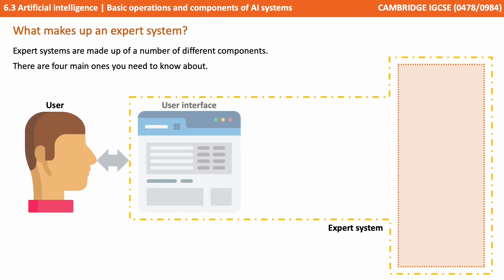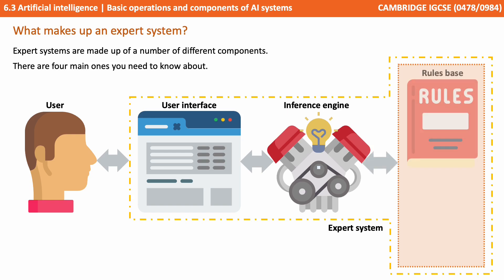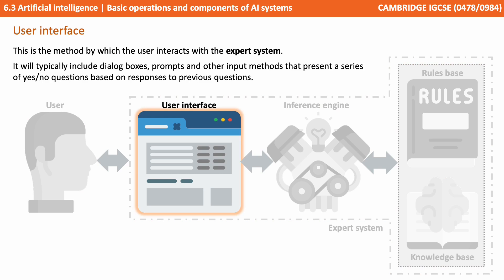So expert systems are made up of a number of different components. There are four main ones that you need to know about. First we have the user interface. This is the method by which the user interacts with the expert system. It will typically include dialogue boxes, prompts and other input methods which present a series of yes or no questions based on the responses to the previous question.